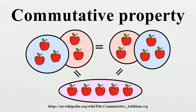The eight commutative binary truth functions are: VPQ equals VQP, APQ equals AQP, DPQ equals DQP, EPQ equals EQP, JPQ equals JQP, KPQ equals KQP, XPQ equals XQP, and OPQ equals OQP. Further examples of commutative binary operations include addition and multiplication of complex numbers, addition and scalar multiplication of vectors, and intersection and union of sets.